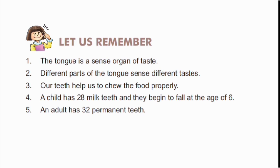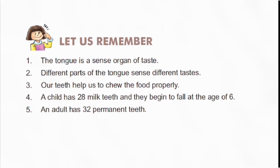Let's remember: 1. The tongue is a sense organ of taste. 2. Different parts of the tongue sense different tastes. 3. Our teeth help us to chew food properly. 4. A child has 20 milk teeth and they begin to fall at the age of 6. 5. An adult has 32 permanent teeth. Thank you, children — we will meet in the next lecture. Till then, keep learning, keep growing. Bye bye!